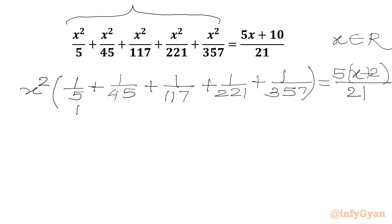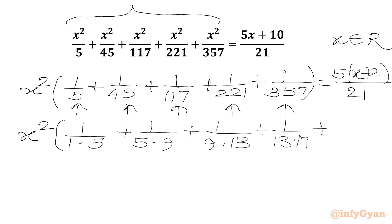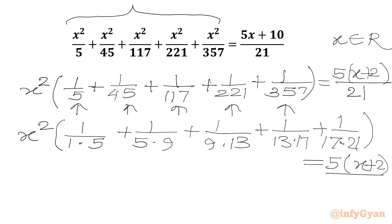Now we are going to factor the denominators. We can split in terms of factorization. We will write 1 over 5 as 1 times 5; 45 can be written as 5 times 9; 117 as 9 times 13; 221 as 13 times 17; and 357 as 17 times 21. This equals 5 times (x plus 2) over 21.